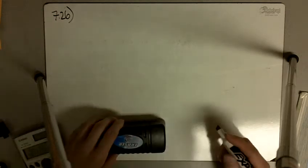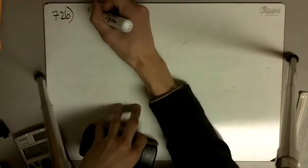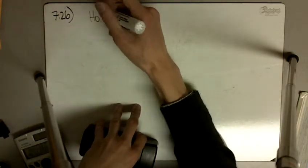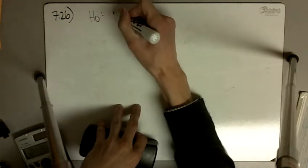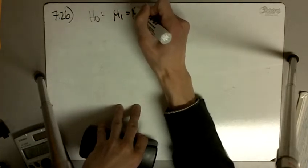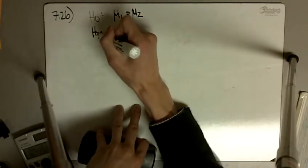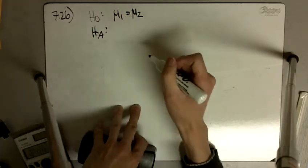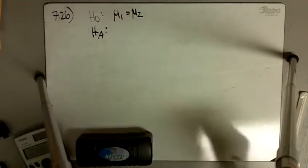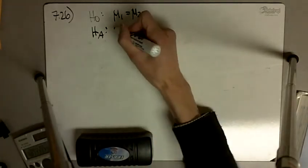Problem 7.26 says: for each of the following situations, suppose the null hypothesis is that μ1 is equal to μ2, and that the alternative is that μ1 does not equal μ2.